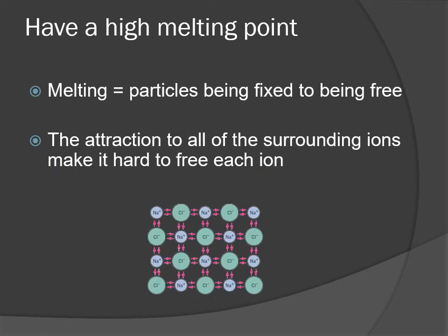This leads ionic compounds to have a high melting point. Remember, melting is essentially being able to get the particles to move around relative to each other—when frozen as a solid they're fixed, and when melted they become free to move. In an ionic crystal though, if you imagine sodium here, it's surrounded by chloride ions—this is just a two-dimensional slice, there's another plane in front and behind as well—and so they're held in place really, really well by those oppositely charged particles. This attraction makes it hard to free these ions, and therefore it's really hard to melt ionic crystals.